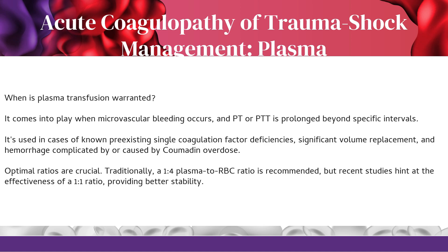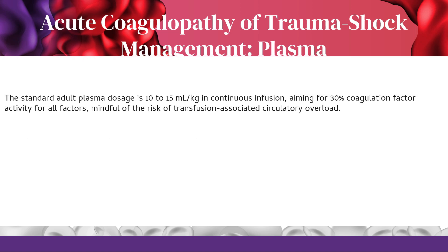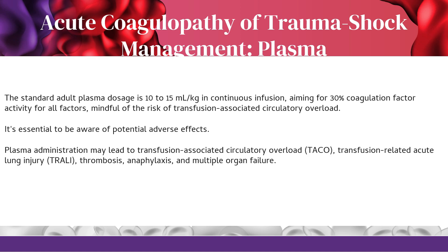Optimal plasma-to-RBC ratios are crucial. Traditionally a 1:4 ratio is recommended, but recent studies suggest a 1:1 ratio may provide better stability. The standard adult plasma dosage is 10–15 mL/kg in continuous infusion, aiming for 30% coagulation factor activity for all factors. Potential adverse effects include transfusion-associated circulatory overload (TACO), transfusion-related acute lung injury (TRALI), thrombosis, anaphylaxis, and multiple organ failure.